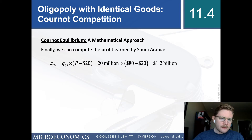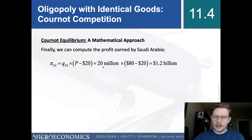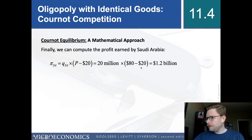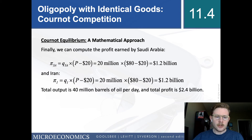Finally, let's look at the profits. Saudi Arabia's profit equals Q Saudi Arabia times (market price minus marginal cost): 20 times (80 minus 20) equals $1.2 billion. Iran is symmetrical — they also earn $1.2 billion in profit, producing the same amount at the same price. So total output is 40 million barrels per day and total profit is $2.4 billion.